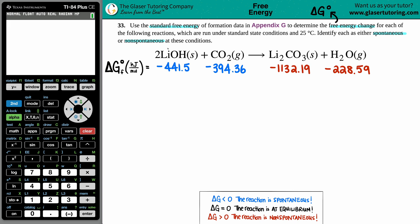For this equation: 2LiOH(s) + CO₂(g) → Li₂CO₃(s) + H₂O(g), I went to the back of the textbook to find out what those values are.